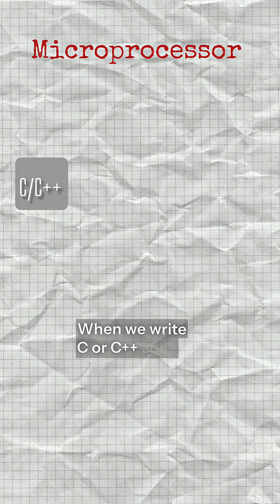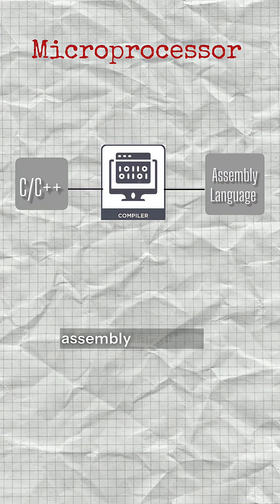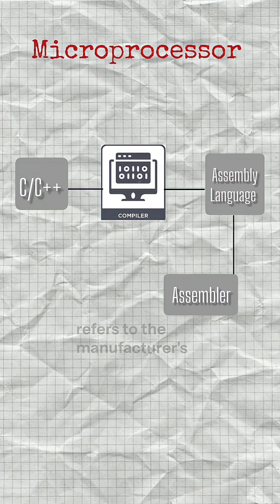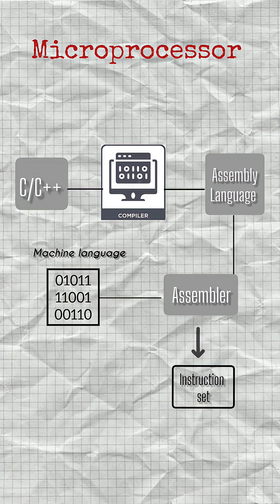When we write C or C++ code, this code is compiled into assembly language, but it changes for every microprocessor. The assembler refers to the manufacturer's instruction set and converts it into machine code.